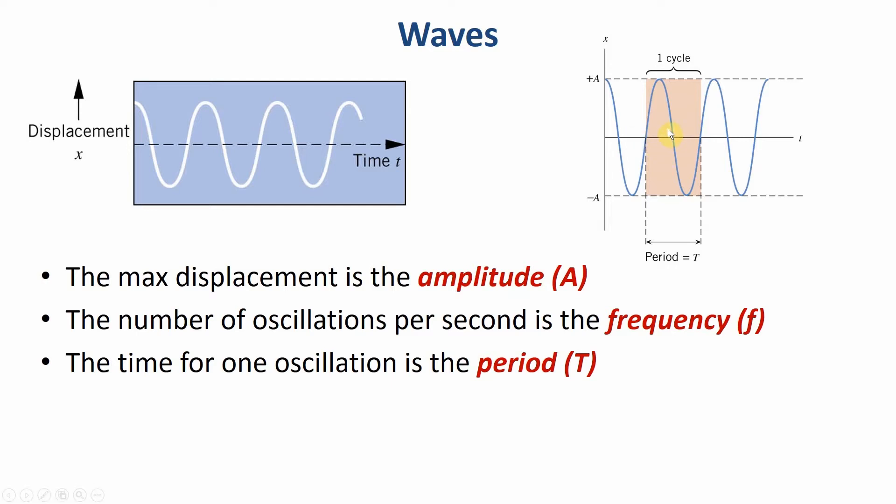The only tricky part is make sure you're counting cycles correctly. A cycle here means one complete path of the motion. If I start here at my positive extreme, I go to the negative extreme and come back, that's one cycle. Or if I start in the middle, I go to the positive end, then the negative end, and then come back. That's one cycle. So don't accidentally get half of that.